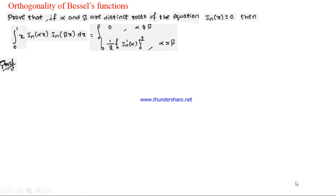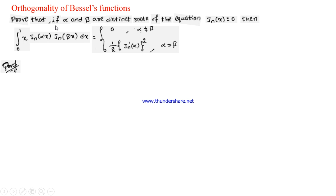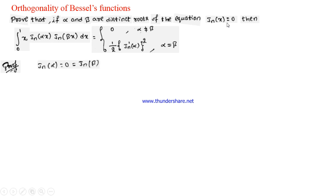Now let us move to the orthogonality property of Bessel's functions. It states that if α and β are distinct roots of Jn(x) = 0, then ∫₀¹ x·Jn(αx)·Jn(βx)dx = 0 if α ≠ β, and equals (1/2)[Jn'(α)]² if α = β. Since α and β are roots: Jn(α) = 0 and Jn(β) = 0.